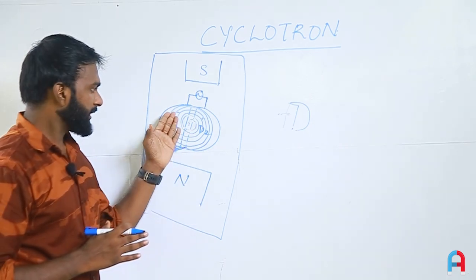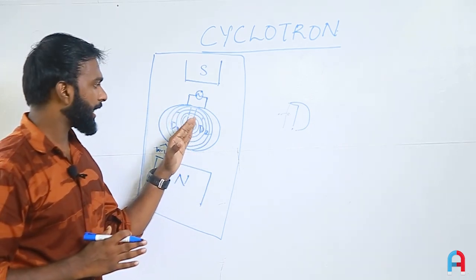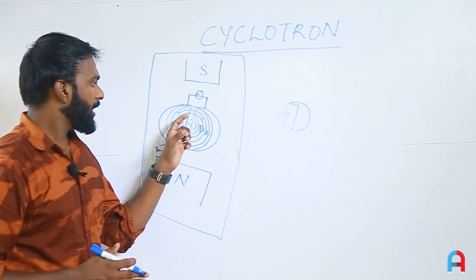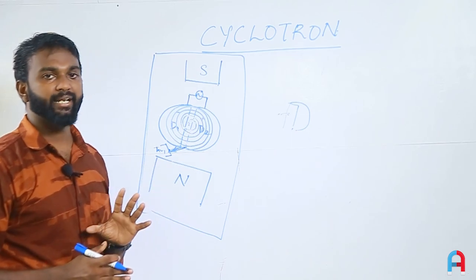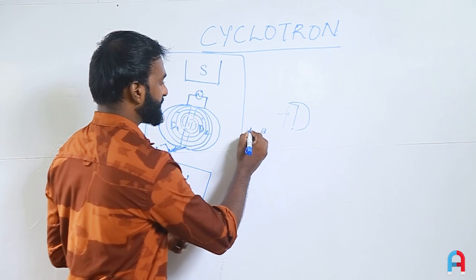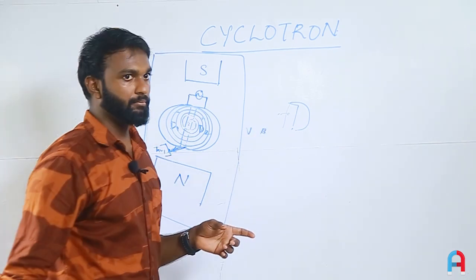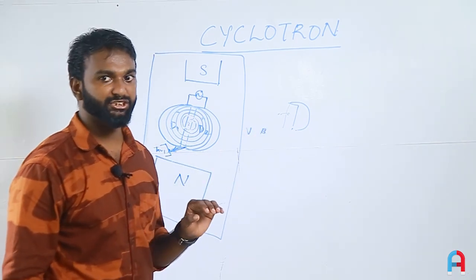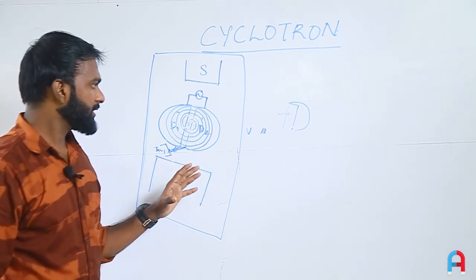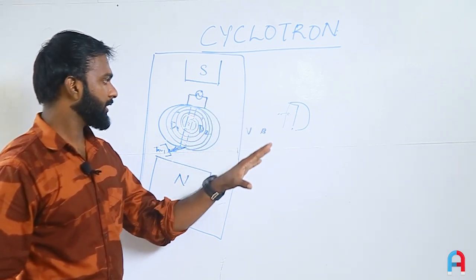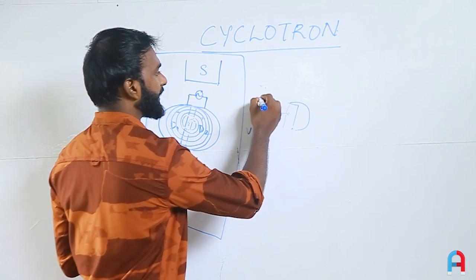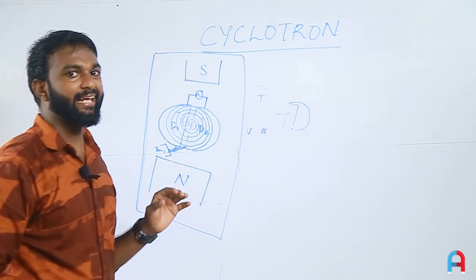To summarize the working principle: the Ds are insulated, there is no electric field inside the hollow D (electrostatic shielding), and the magnetic flux density is perpendicular to the particle's motion. Now we will derive the expressions for radius, time period, and energy of the cyclotron.